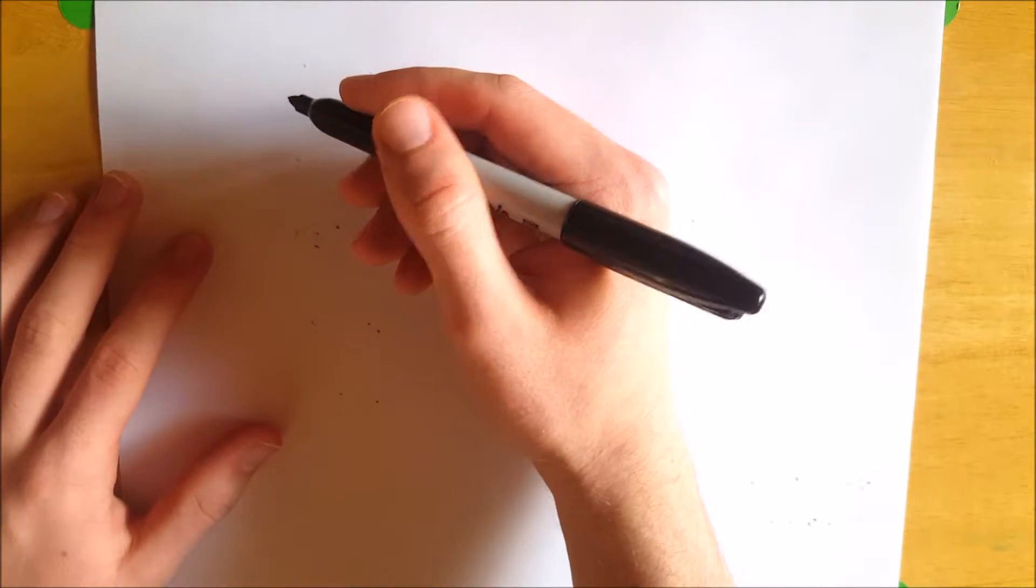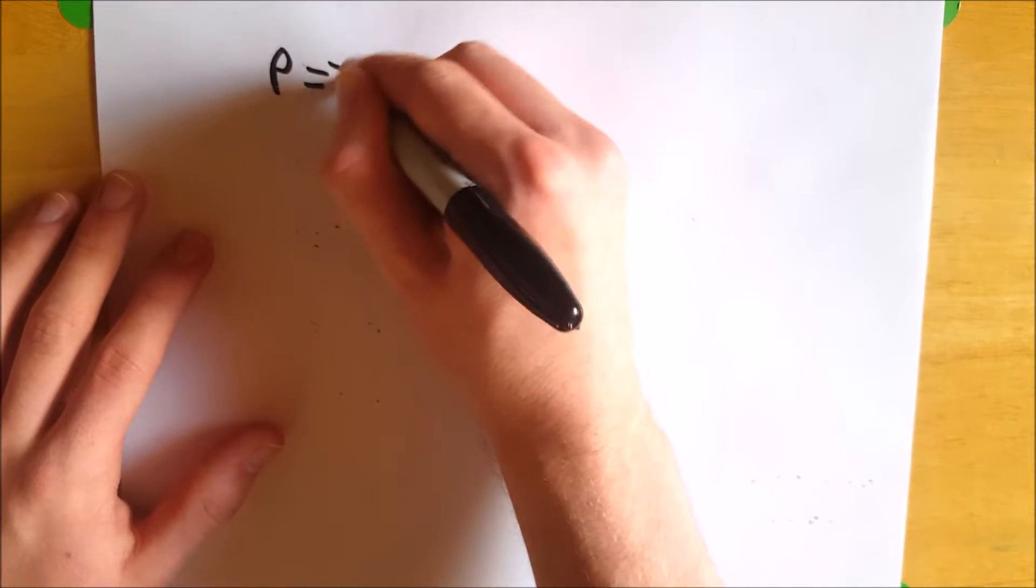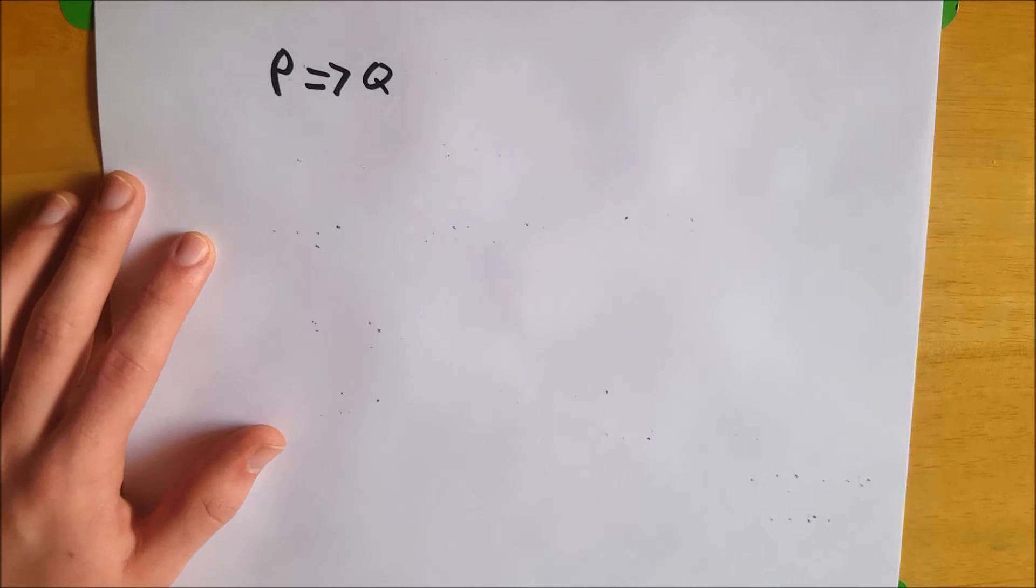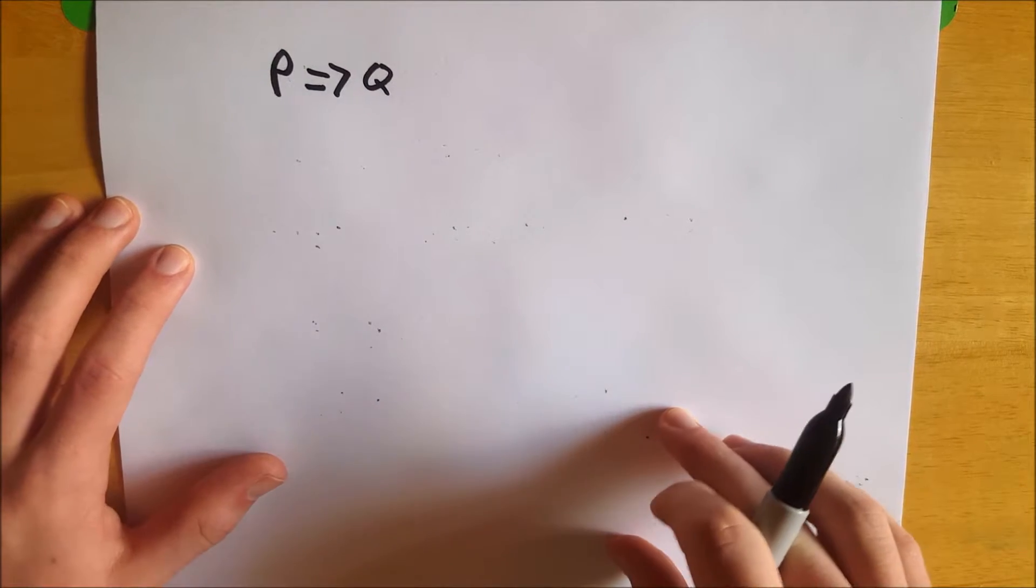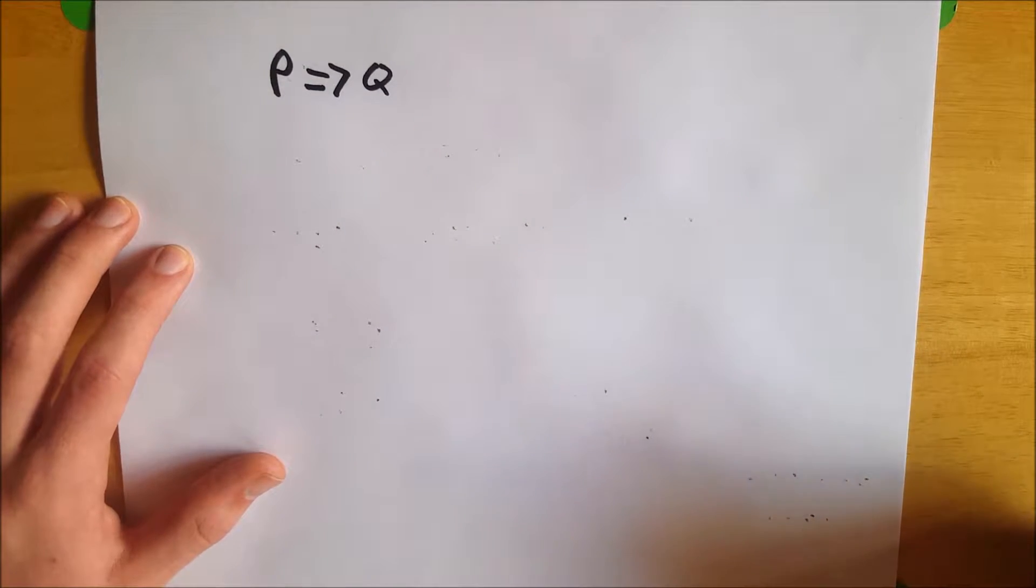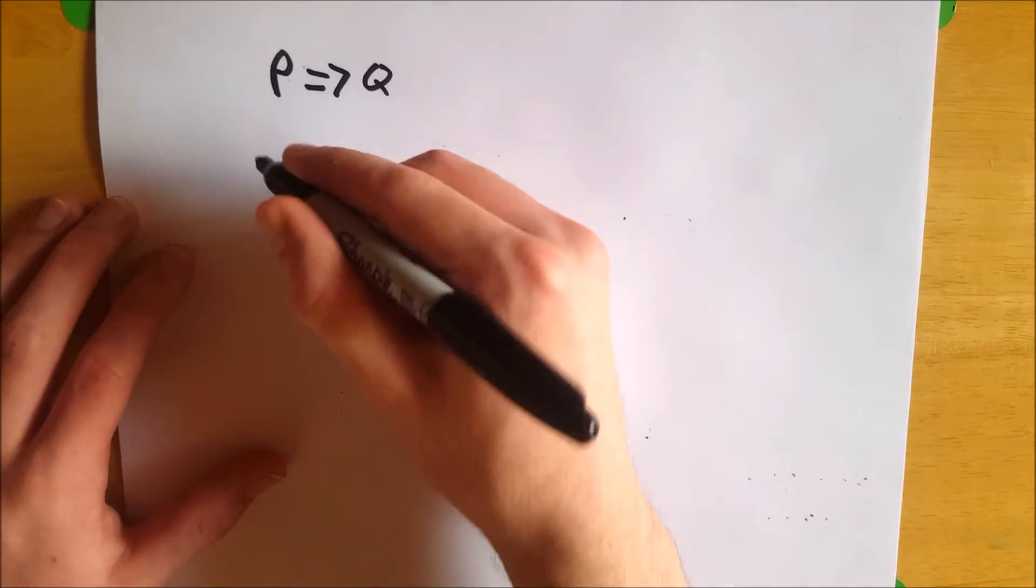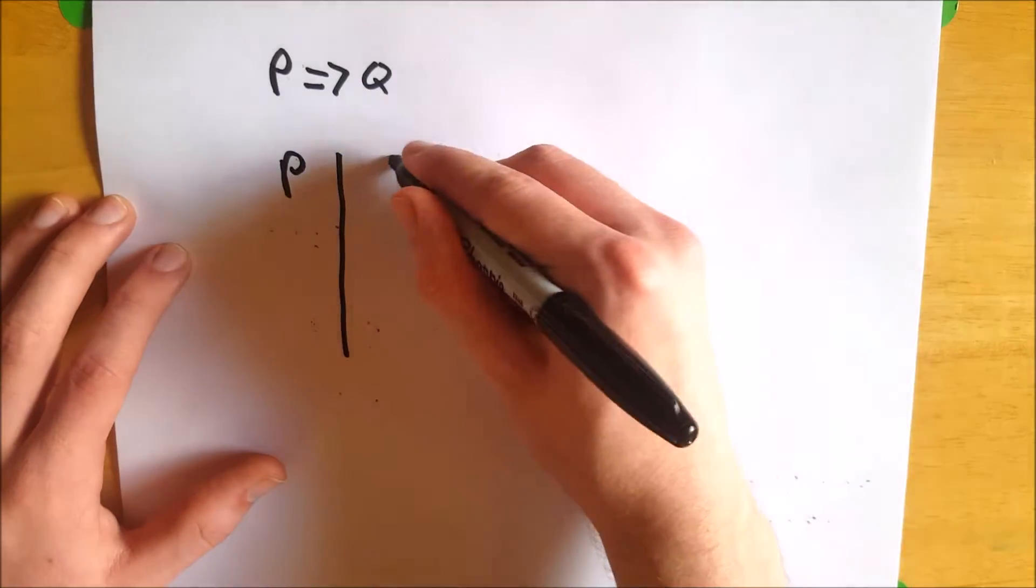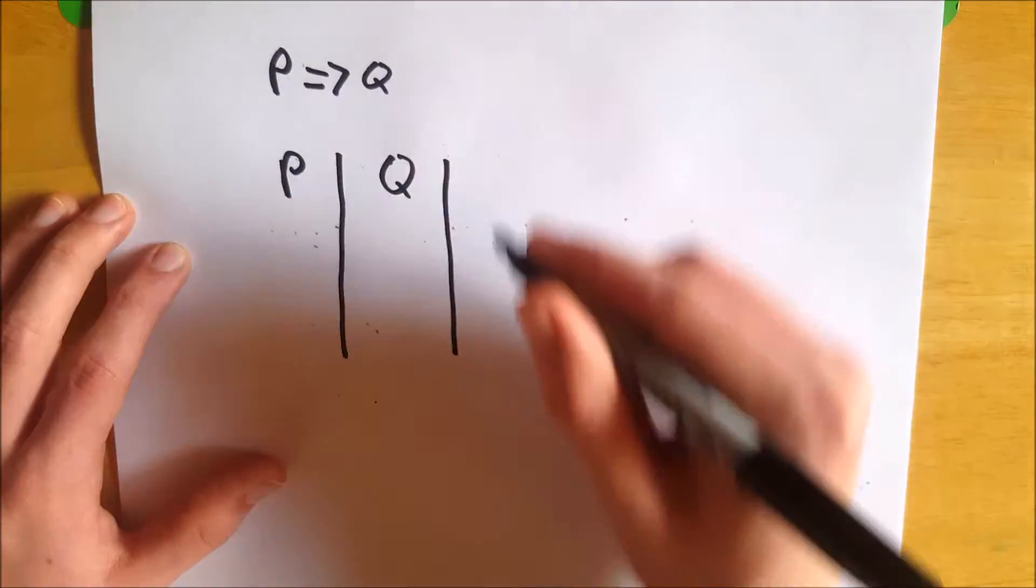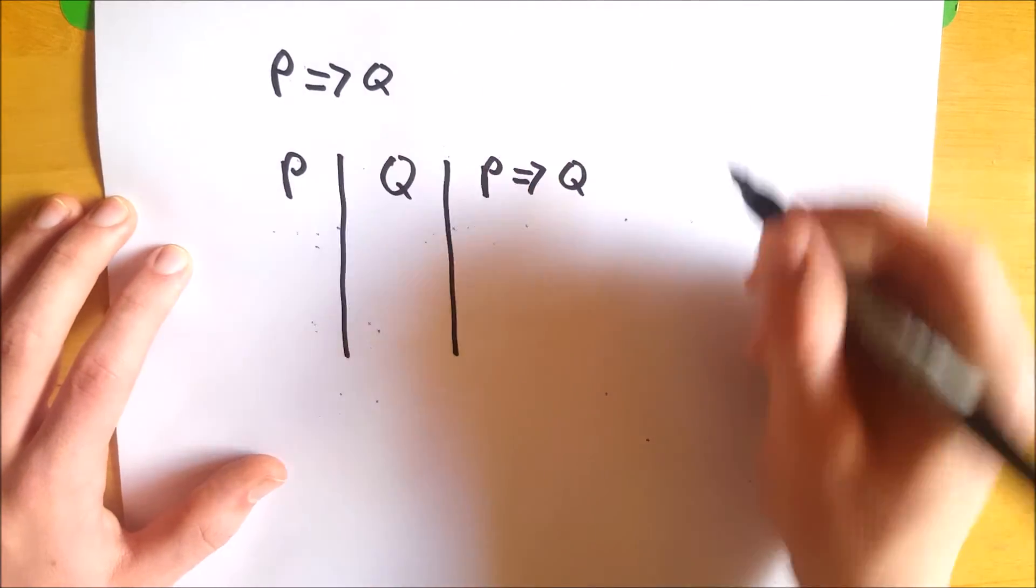So let's just consider a generic if-then statement if P then Q, which we'll write as P implies Q. We're going to use what is called a truth table here just so I can draw out very easily for you when this statement if P then Q, when that's true. So we've got P in one column, Q in another column, and then the statement that we're looking at, P implies Q, in the last column.